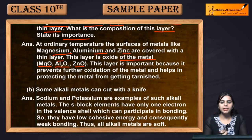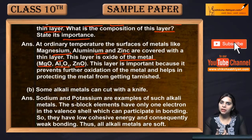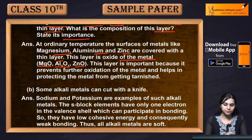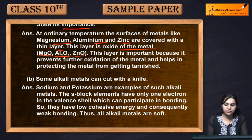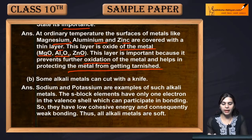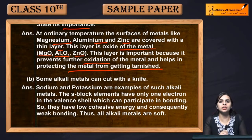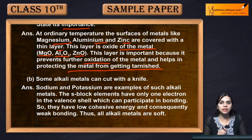When your metal is in the atmosphere and in contact with oxygen, it forms a layer of oxide. This layer is important because it prevents further oxidation of the metal and helps protect the metal from getting tarnished. The importance of this layer is to prevent rusting or corrosion of the metal.